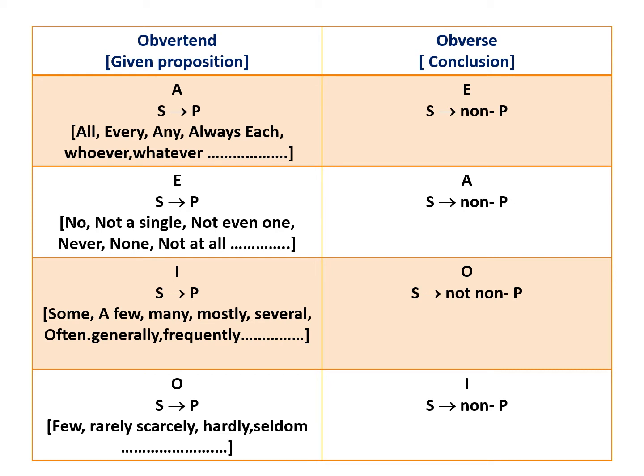Suppose the words like some not, few, rarely, scarcely, hardly, seldom are used in a given proposition, then the proposition is an O-proposition. Suppose the basic form of an O-proposition is given as 'some S is not P', then its obverse will be I, that is 'some S is non-P'.